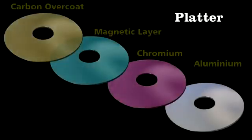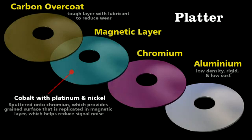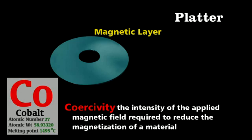The key element of the platter is the magnetic layer, which is cobalt with perhaps platinum and nickel mixed in. This mixture of metals has high coercivity, which means that it will maintain that magnetization, and thus data, until it's exposed to another powerful magnetic field.